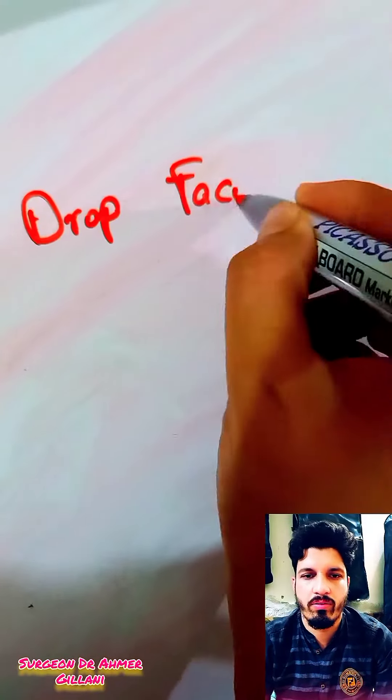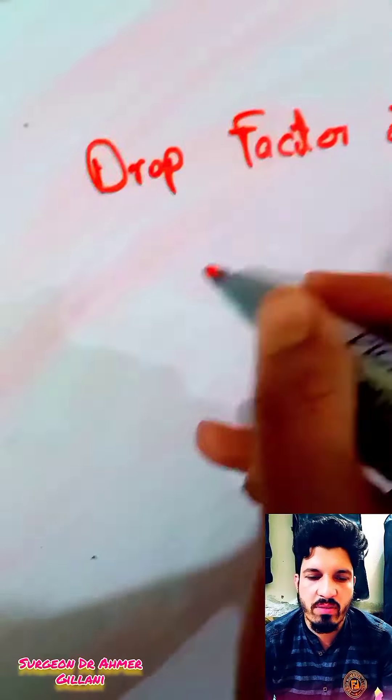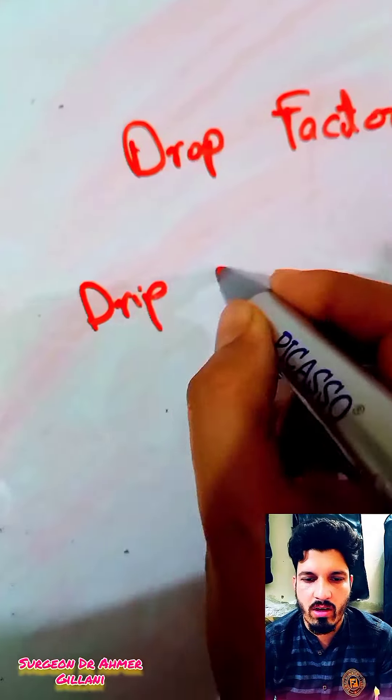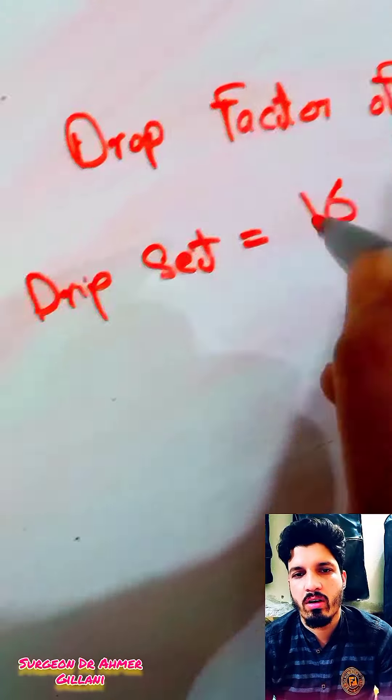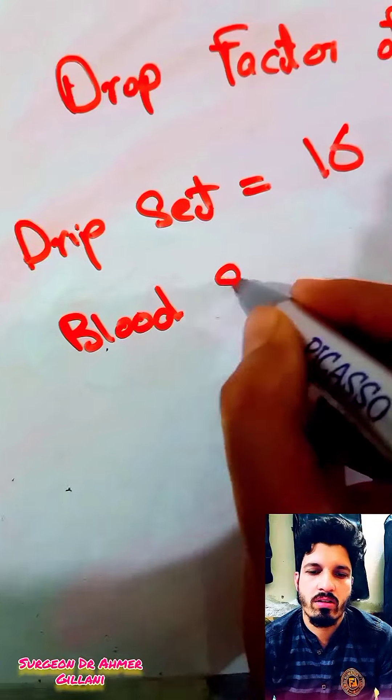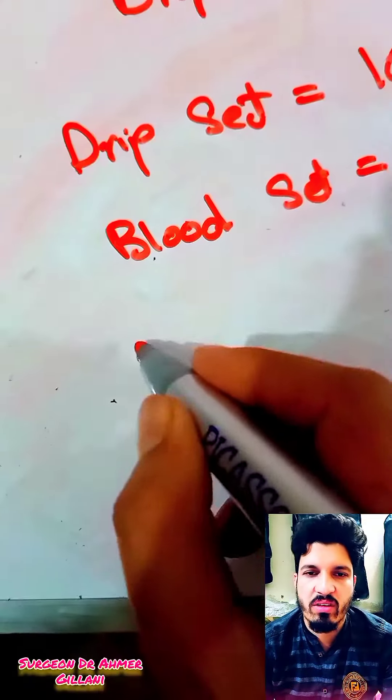Drop factor for drip set is almost 16. For the blood set it is 12. For the pediatric chamber it has got a value of 60.